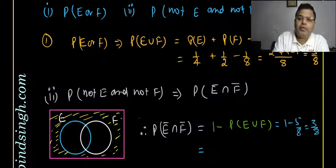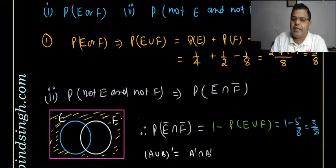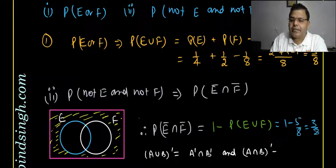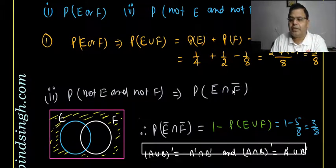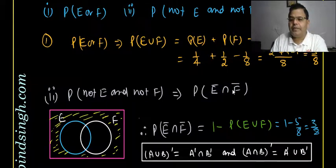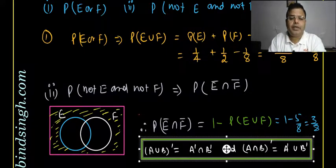Remember De Morgan's law: (A ∪ B)' = A' ∩ B', and (A ∩ B)' = A' ∪ B'. This law was used here to convert P(not E and not F) into 1 − P(E ∪ F).